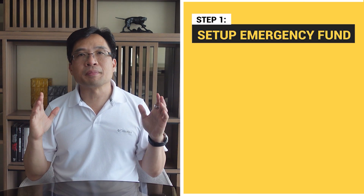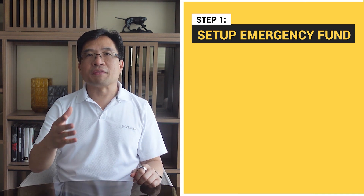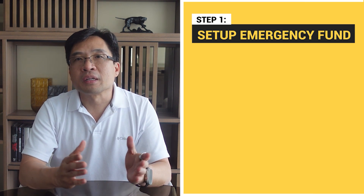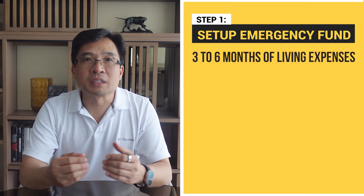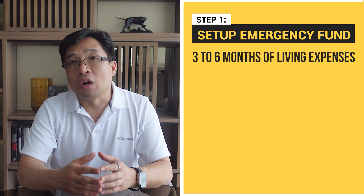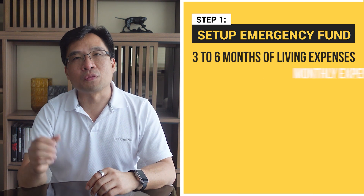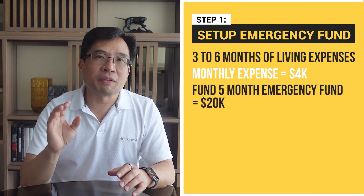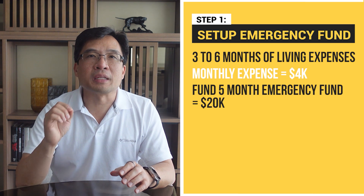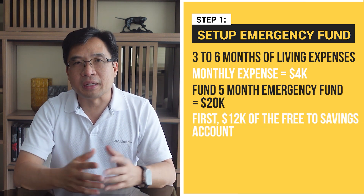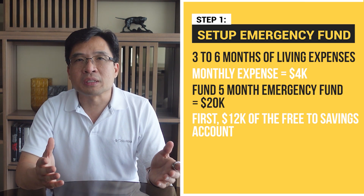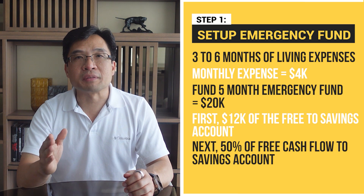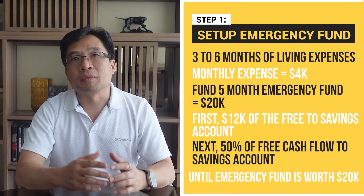Step 1: Setting up an emergency fund. Once you have a positive cash flow, establish an emergency fund — a financial safety net covering three to six months of living expenses for unexpected events like job loss, medical emergencies, or major home repairs. Let's say my monthly expenses are around $4,000. I'll create an emergency fund covering five months of expenses: $20,000. I'll save the first $12,000 of my free cash flow into a high-yield savings account where I can quickly access it — currently earning four to five percent interest. That's a three-month emergency fund. I'd continue adding 50% of my free cash flow until it reaches $20,000.